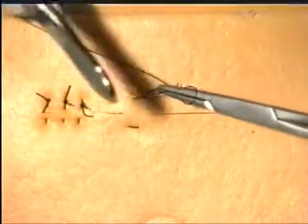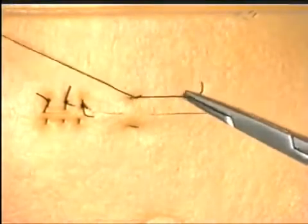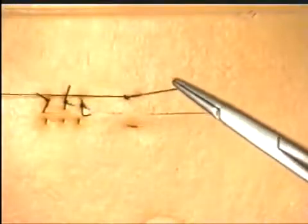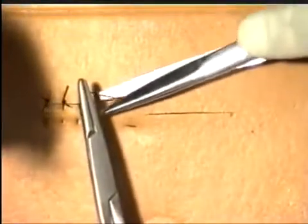One can see very clearly why this is called a horizontal mattress suture. Once again, the reef knot is tied in the standard manner and the suture material cut.